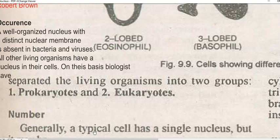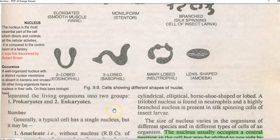Prokaryotes are those that lack a distinct nuclear membrane, whereas eukaryotes are those that have a distinct nuclear membrane. All other living organisms have a nucleus in their cell — that is, all eukaryotes should be having one. On that basis, biologists have separated the living organisms into these groups.